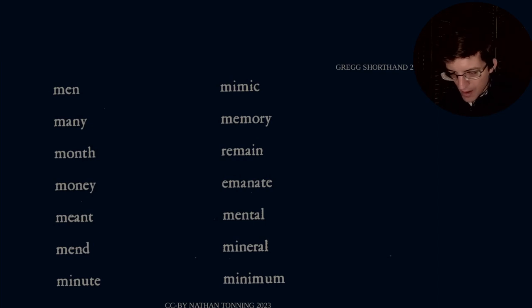So men. Men is just one long stroke. There we go. And many is the same but with an E at the end. So men, many, month, M-N-N-TH, month. Money is the same as many. So it would just depend on the context. Many. Ment is M-N-T. M-T. Mend is M-N-D. M-N-D. Minute is M-N-N-I-T. Minute.